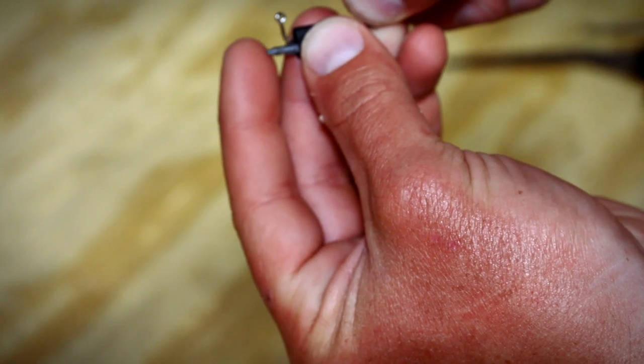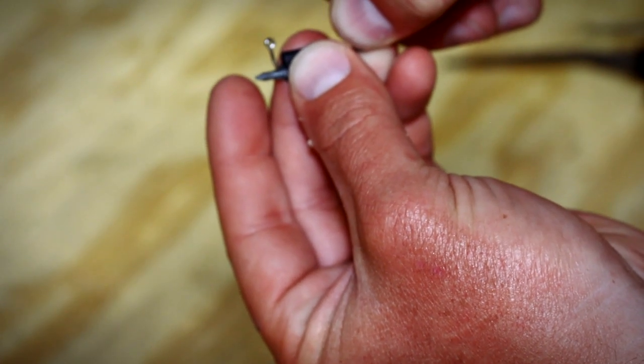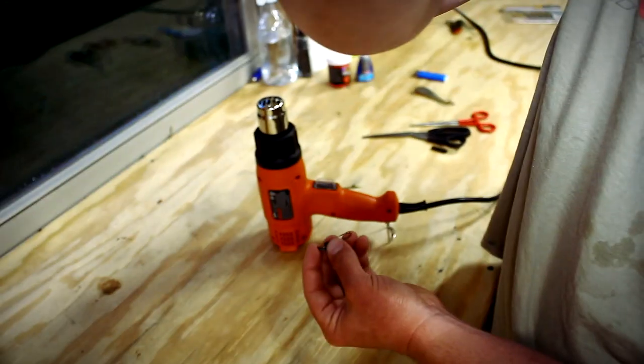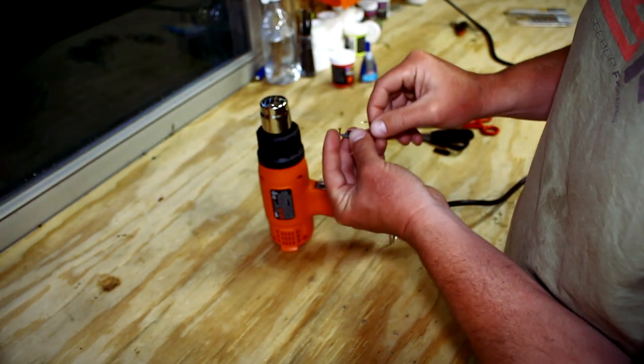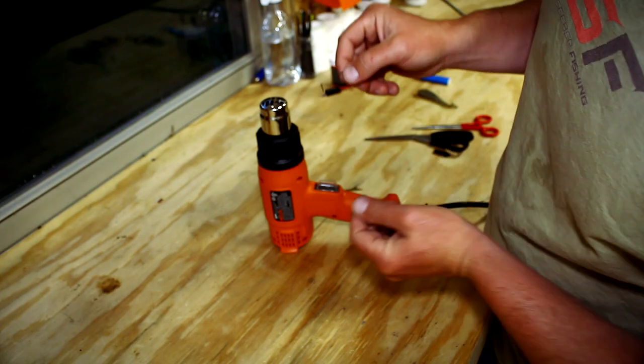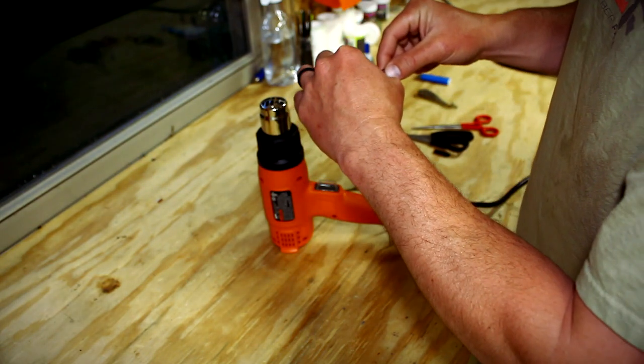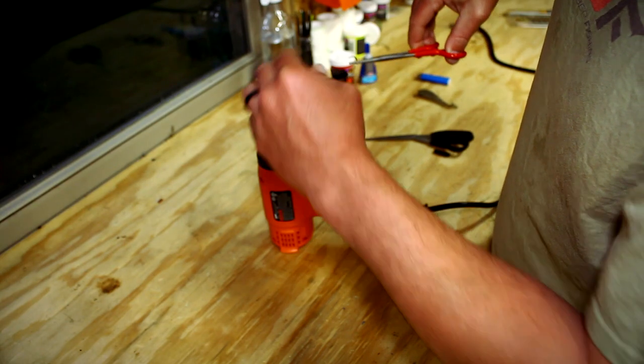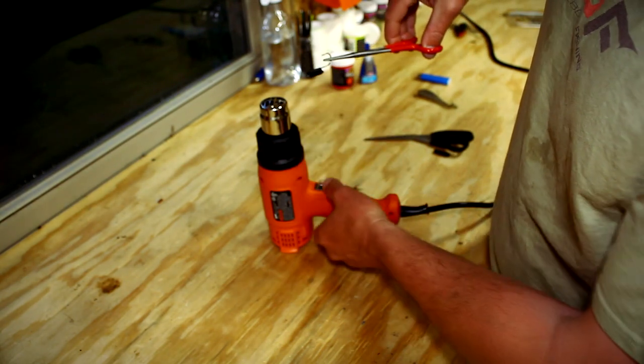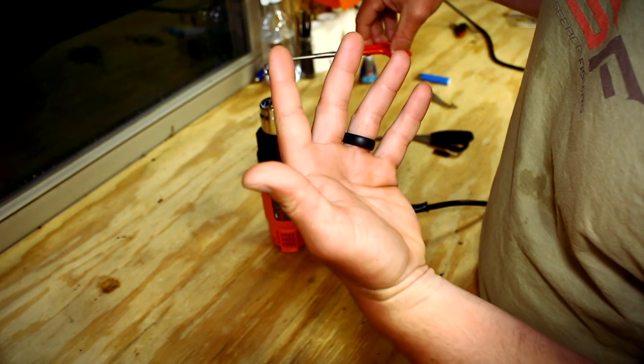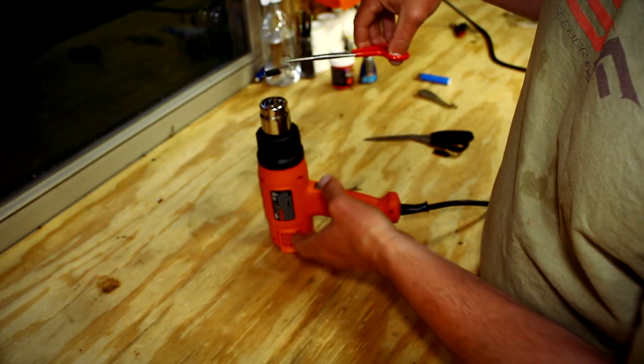So what I'm gonna do now is bring the heat gun into the picture. You're gonna essentially hang it on there, just an eighth past the bend of the hook. Get you some pliers because this will burn you. Then you turn your heat gun on and then you obviously shrink your shrink wrap.